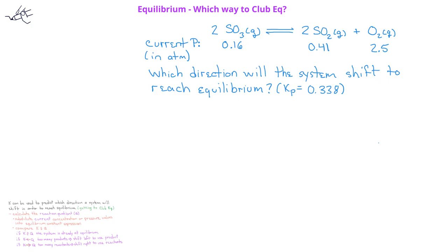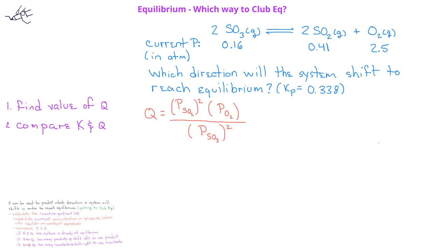In order to answer this question, we need to use the current pressures given, calculate the reaction quotient Q, and then compare K and Q. Since we're given pressures of each gas, we'll use the equilibrium constant with pressure units. The equilibrium constant expression is the pressure of SO2 squared times the pressure of O2, divided by the pressure of SO3 squared. Plugging in 0.41 for SO2, 2.5 for O2, and 0.16 for SO3: